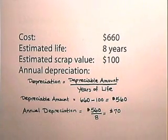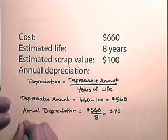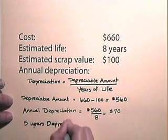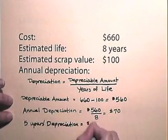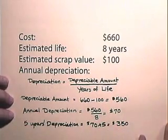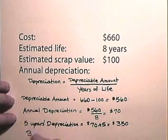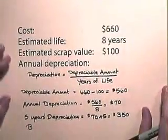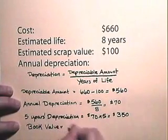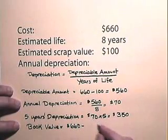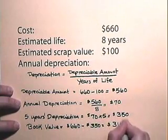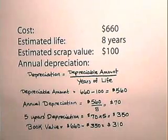We want to find the book value at the end of 5 years. For 5 years of depreciation, we have $70 times 5, which is $350. So the book value at the end of 5 years will be the cost of $660 subtract the 5 years' depreciation of $350, which gives us $310. So the book value of this asset at the end of 5 years will be $310.